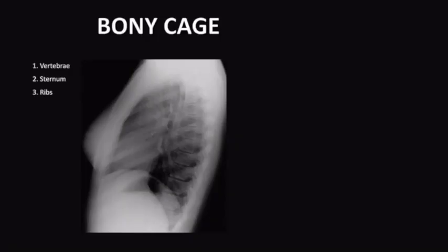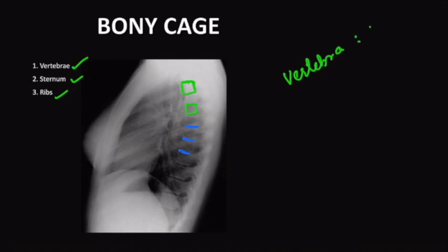Now coming to the bony cage. In the lateral radiograph, three structures are emphasized: vertebrae, sternum, and ribs. In the frontal radiograph, you have to see the vertebrae through the heart shadow, which makes it very difficult. Whereas in the lateral radiograph, you can see the whole contour of the vertebral body and the intervertebral disc space — the radiolucent area between them. Look at the size, check for any collapse, and look for obliteration of the disc space. Assess size, contour, and intervertebral disc space.